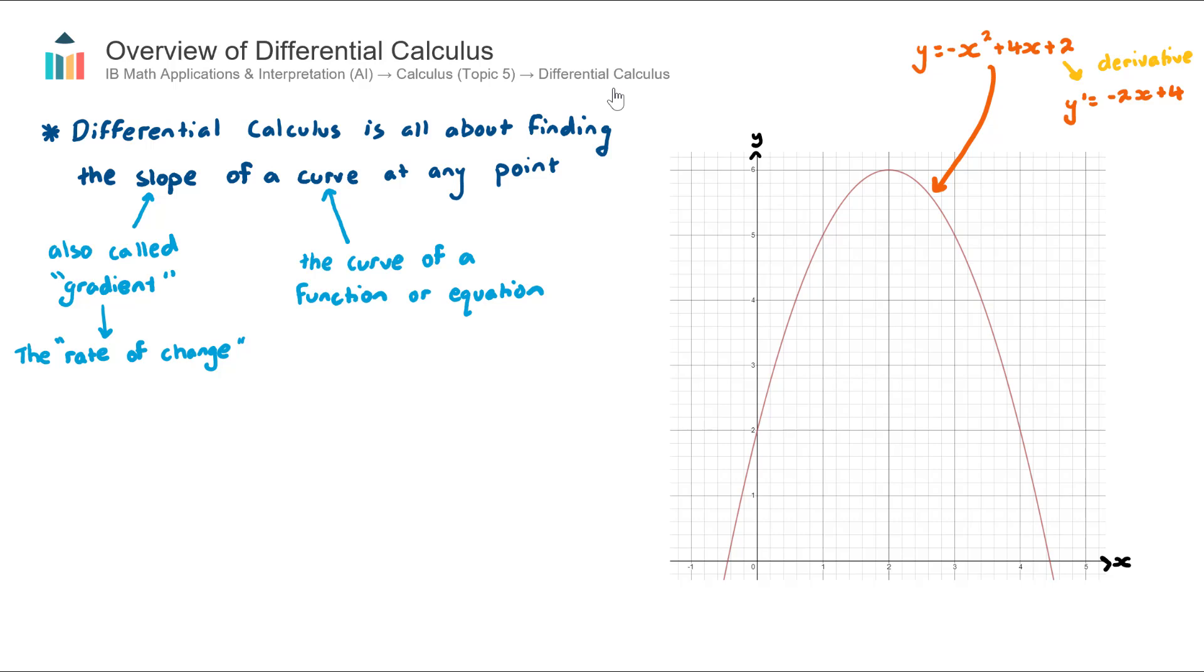Now before we get into all the details of how to differentiate, so for example going from an initial equation then differentiating to find the derivative, before we start finding equations of tangents and normals, before we start finding turning points and understanding what they mean in the context of optimization, I think it's important to start by actually visually understanding what are we doing here when we differentiate. That way in future when you get an equation and you find the derivative you actually know what it means in the context of the question.